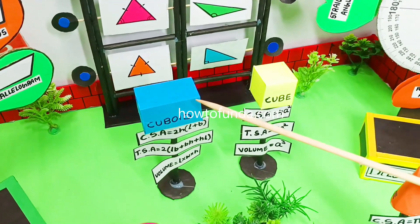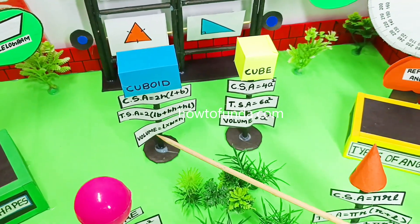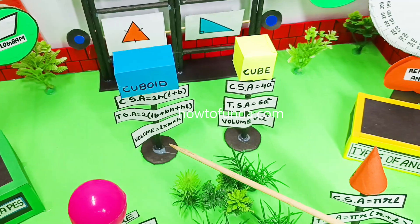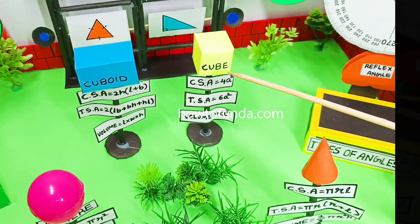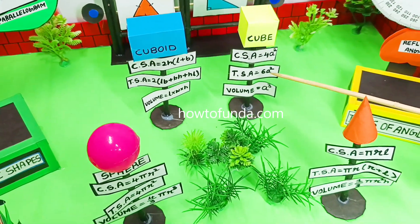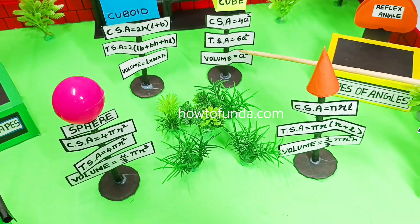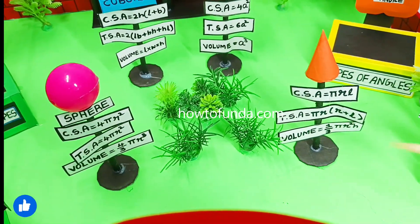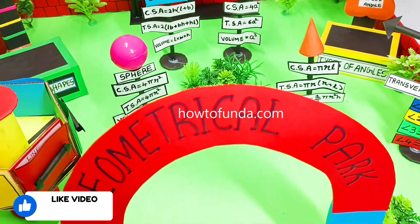We also depicted various 3D shapes for which we have given CSA formula, TSA formula, as well as volume formula. Similarly, we have given formulas for cube, cylinder, and cone as well. These are the various things depicted in the geometrical park.